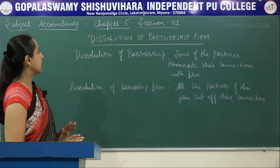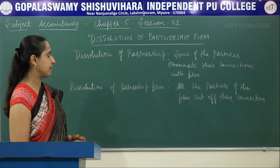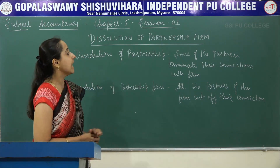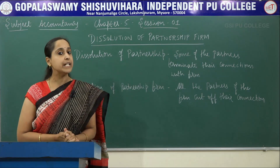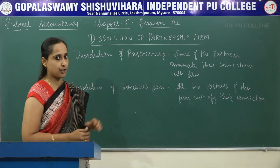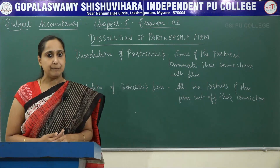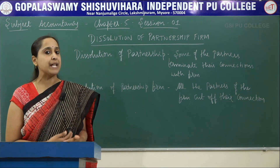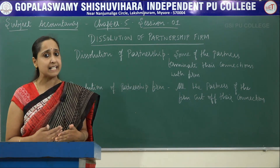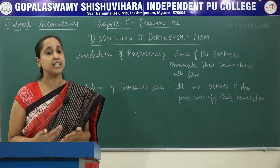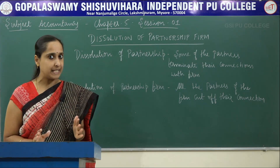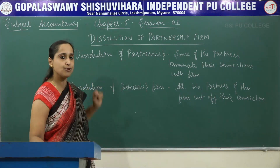Now let us see what is Dissolution of Partnership and Dissolution of Partnership Firm. Dissolution of Partnership means when some of the partners terminate their connection from the business, that is known as Dissolution of Partnership. For example, suppose A, B, and C are partners; if A retires, then B and C continue their business with a new agreement. Only A cuts off his connection — that is known as Dissolution of Partnership.